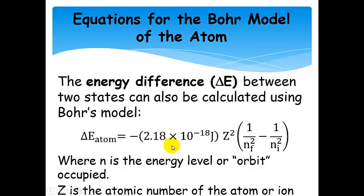the quantum number for the final state, minus 1 over the quantum number for the initial state squared. Now, be sure to square it. It's easy to forget to do that in these calculations. And so, N is still just the principal quantum number for the state, and Z is the atomic number of the atom or the ion.